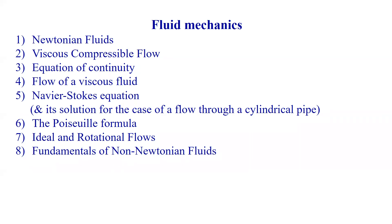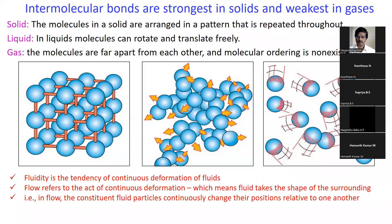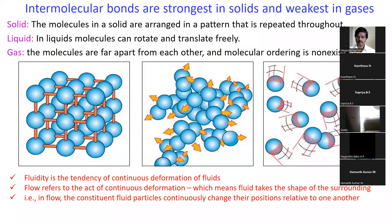At the end of the last class I was mentioning about phase diagrams and the intermolecular bonds, which are strongest in solids and weakest in gases. We can observe the difference in the schematic representations from left to right: the left extreme is for solids, where molecules are arranged in a repeating pattern — whether face-centered, body-centered cubic, or otherwise — varying from element to element.